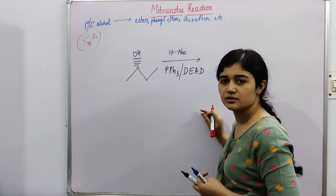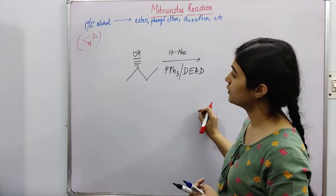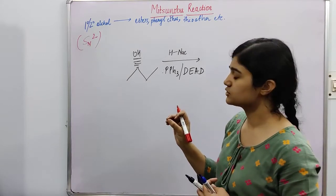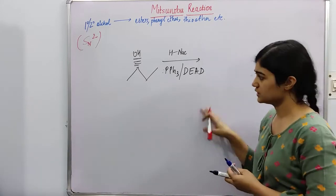Tertiary undergoes SN1 reaction. So the one factor that is associated with SN2 reaction is inversion of the configuration.